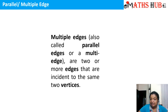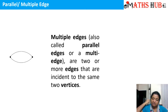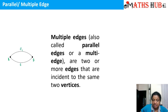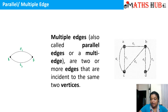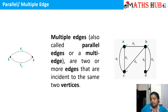Now let's move on to parallel or multiple edges. When two or more edges connect the same two vertices, those edges are called multiple edges or parallel edges. Here you can see two vertices being connected with the help of two edges. Edge 1 is connecting vertex A to vertex B, and edge 2 is also connecting vertex A to vertex B. Likewise, in another example, the multiple edges E1 and E2 connect vertices A and C, and multiple edges E5 and E6 connect vertices B and D. So when two or more edges connect the same two vertices, they are called multiple edges or parallel edges.